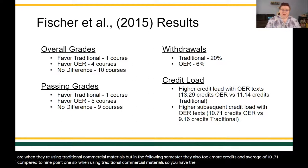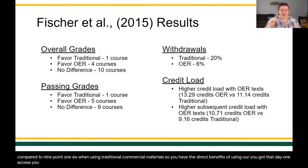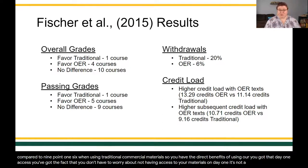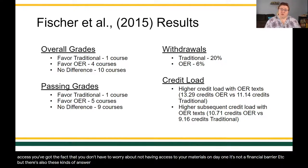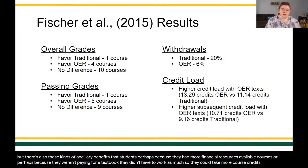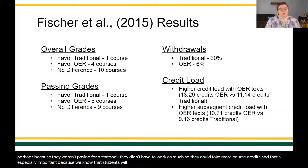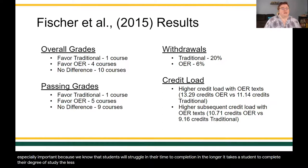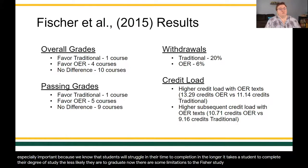Most interestingly, when using OER textbooks, students took more courses — an average of 13.29 credits per semester compared to 11.14 with commercial materials — and in the following semester also took more credits: 10.71 versus 9.16. Beyond day-one access and no financial barrier, there are ancillary benefits: students may have had more financial resources and were able to take more courses, or weren't working as many hours, so they could carry more credits. This matters because the longer it takes a student to complete their degree, the less likely they are to graduate.